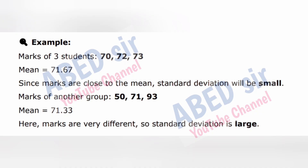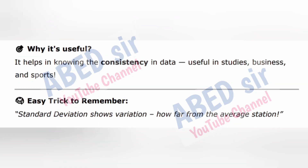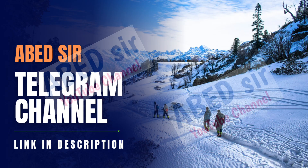Marks of another group: 50, 71, 93. Mean = 71.33. Here marks are very different, so standard deviation is large. Standard deviation is useful in knowing the consistency in data — useful in studies, business, and sports. Easy trick: Standard deviation shows variation, how far from the average station.